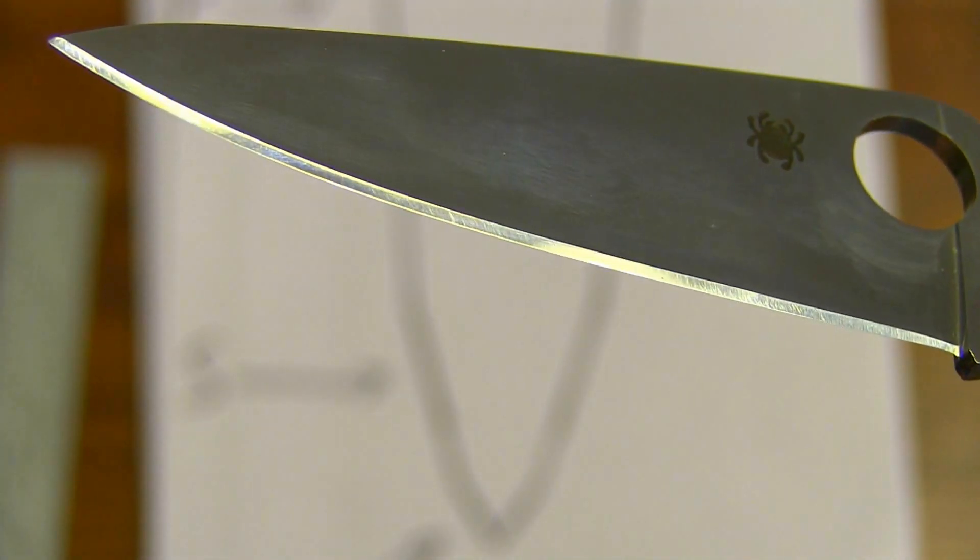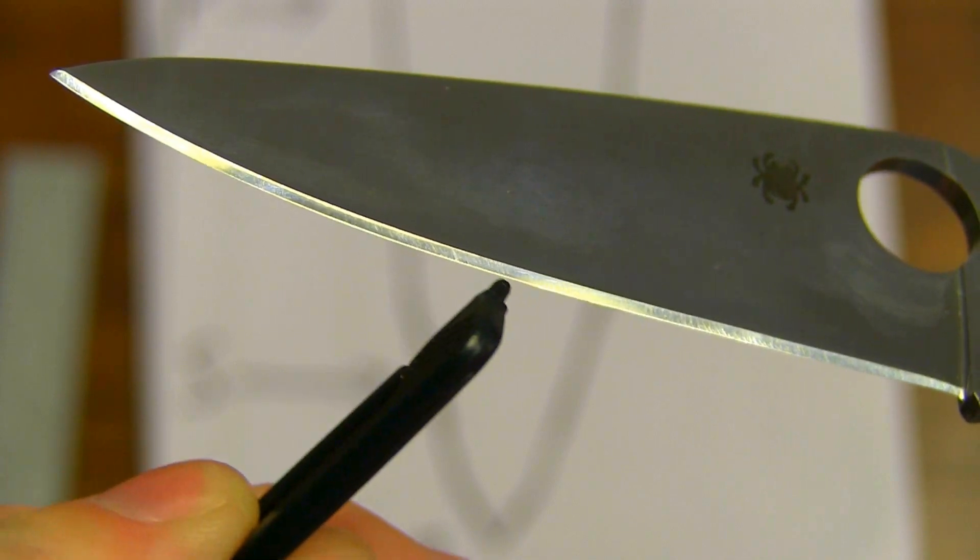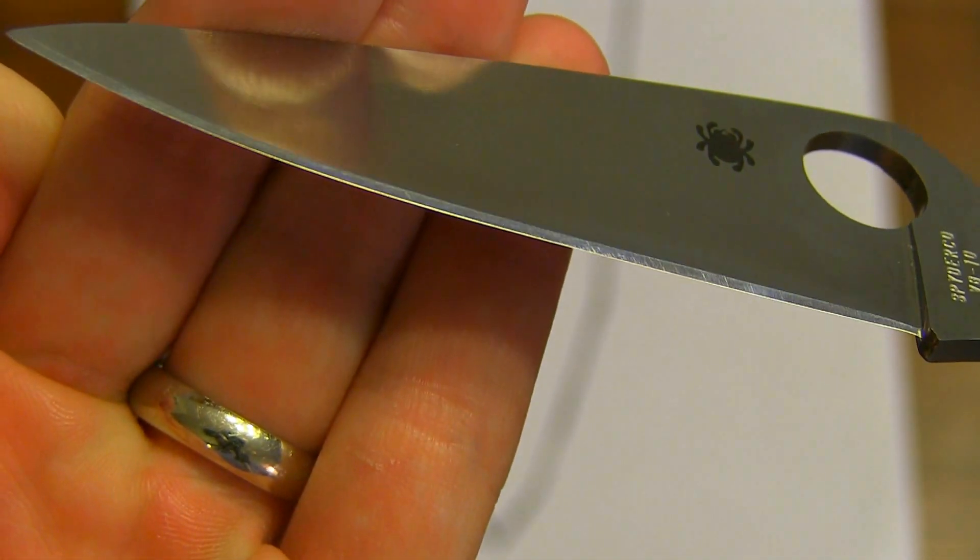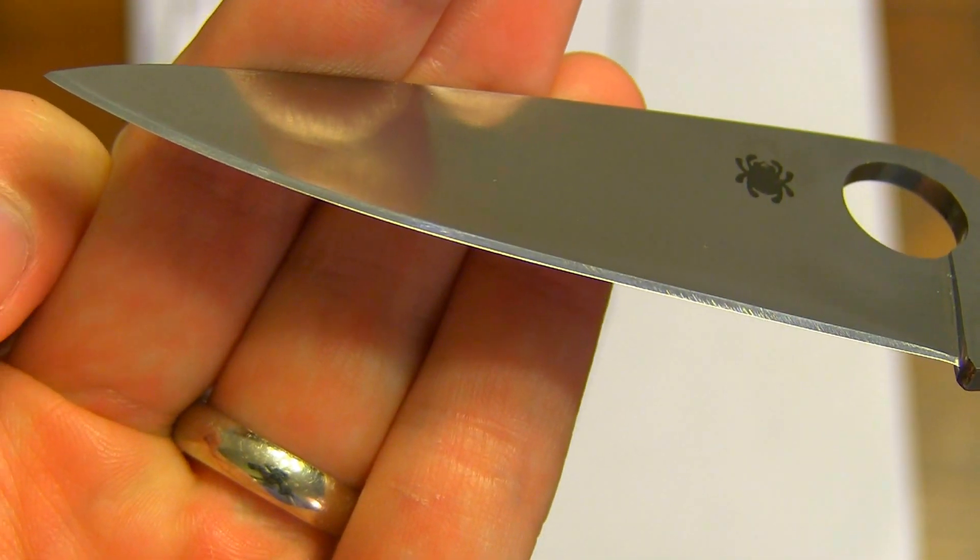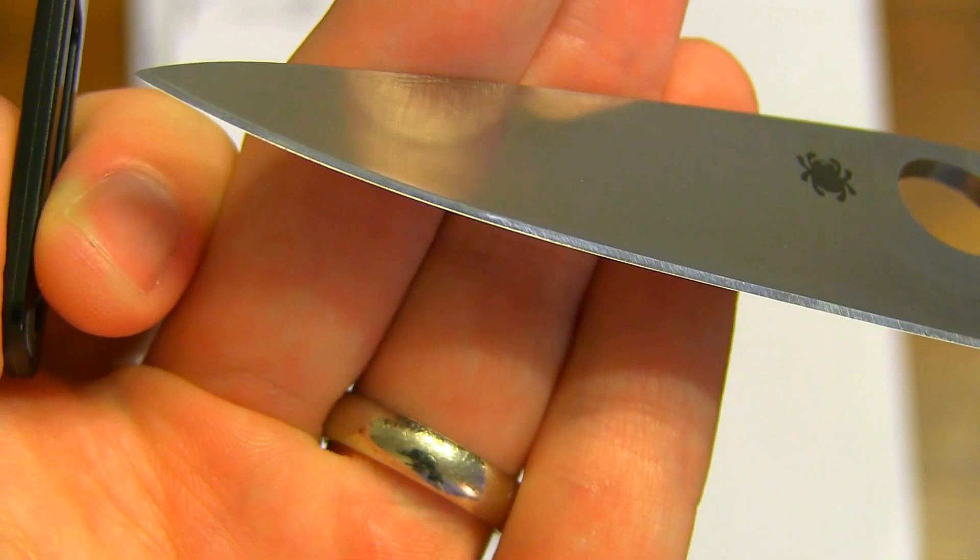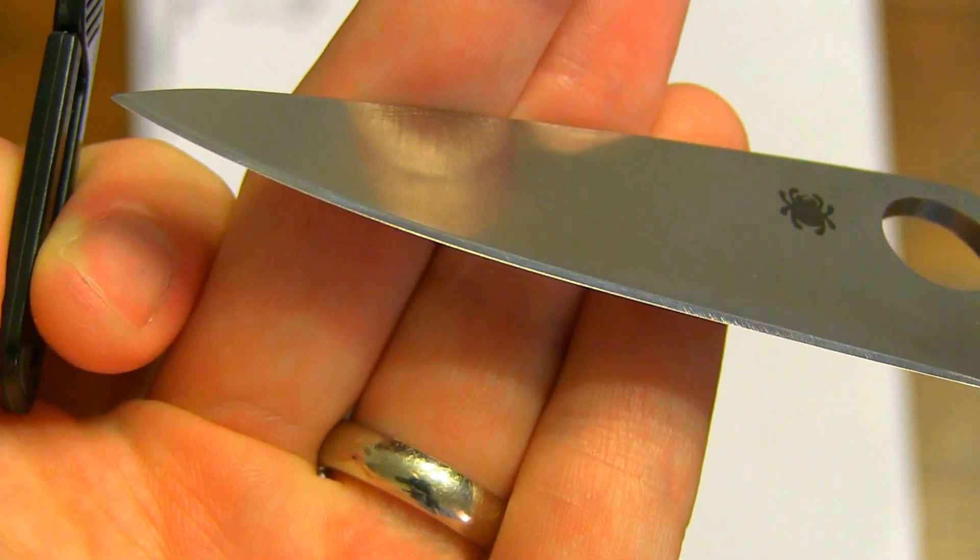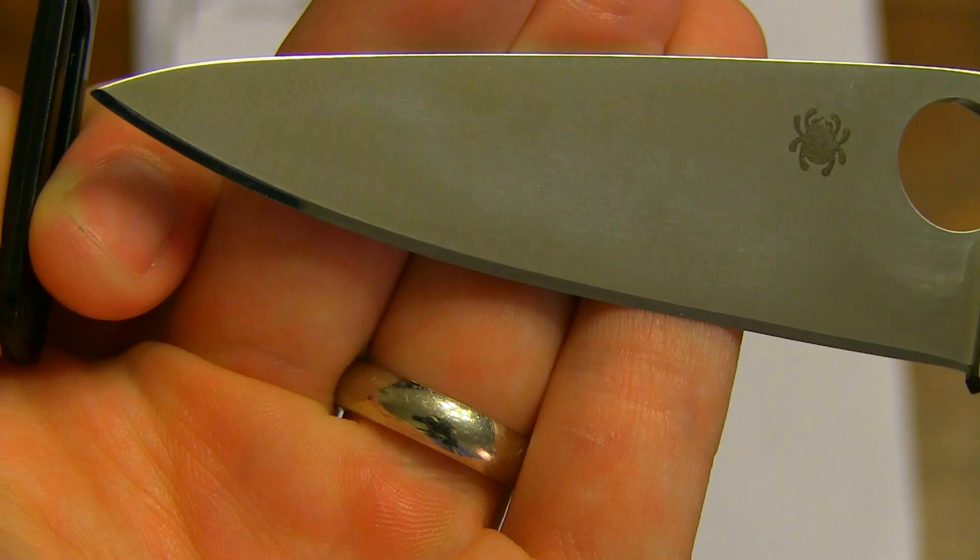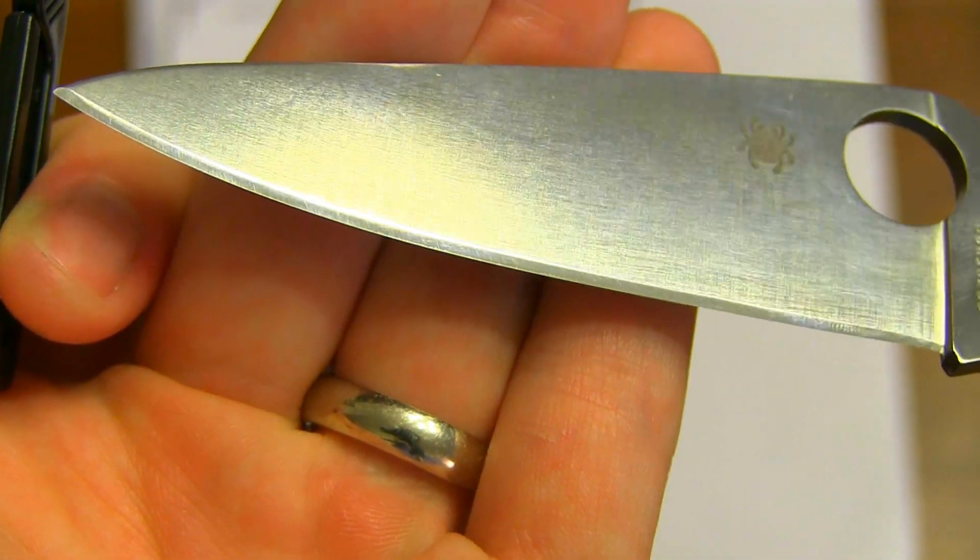See how the very apex of this edge is really bright? It's reflecting light. That's because it's at a different angle and it's reflecting light. There you go, there's a good shot of it right there. All this shininess at the edge is a micro bevel. That's what that is. And the reason it's reflecting light and the rest of the bevel isn't is because it's on a different angle.